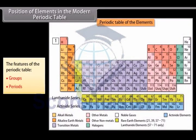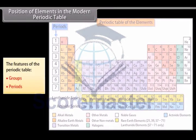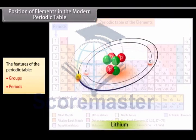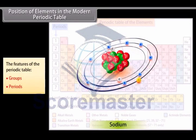Periods. The 7 rows in the Periodic Table are called Periods. In each period, a new shell fills up. The period number is also the number of shell which starts filling up.